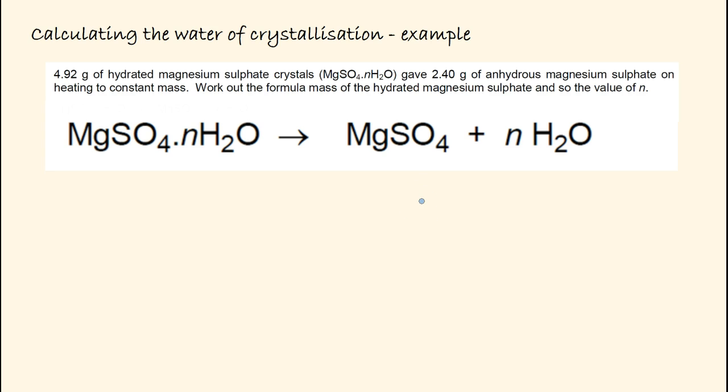Work out the formula mass of the hydrated magnesium sulfate and the value of N. For MgSO4·nH2O, we have 4.92 grams of the hydrated magnesium sulfate. When heated, we end up with 2.40 grams of anhydrous magnesium sulfate—that is, without the water.